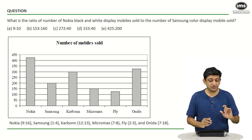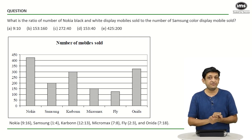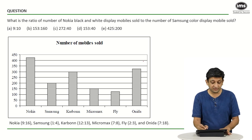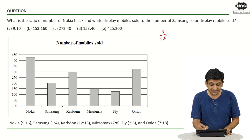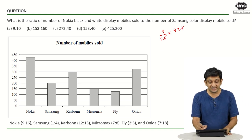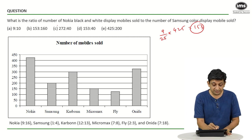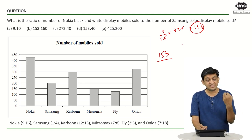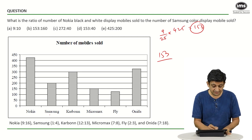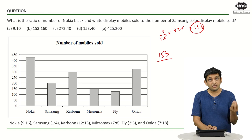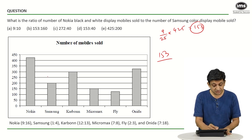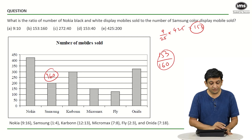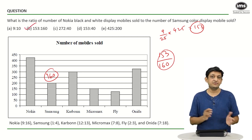For the third question, we have to find the ratio of Nokia black and white display mobiles to Samsung color display mobiles. Nokia black and white is 153, which we already found. For Samsung, we found 40 phones had black and white displays, so color displays = 200 − 40 = 160. The ratio is 153:160, so the correct answer is option B.